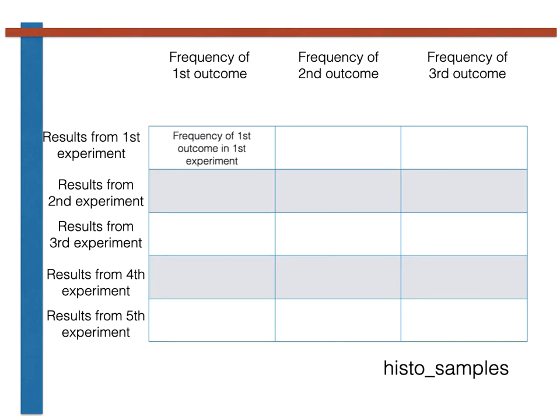This cell thus contains the estimate of the frequency of the first outcome that was obtained from the first experiment. This cell contains the estimate for the frequency of the second outcome that was obtained in the third experiment. This cell contains the estimate for the frequency of the third outcome that was obtained from the fifth experiment.